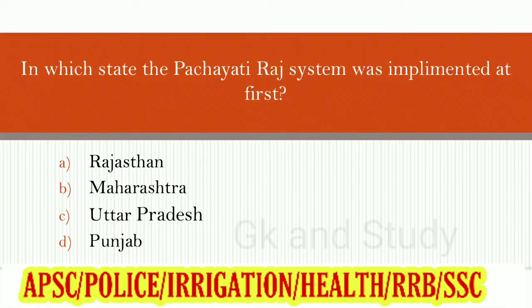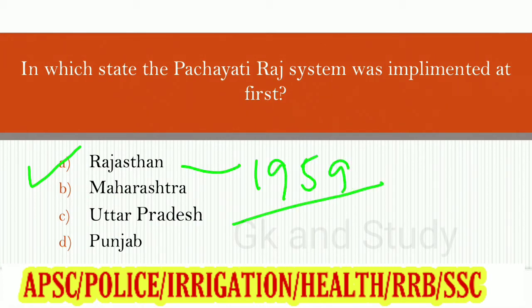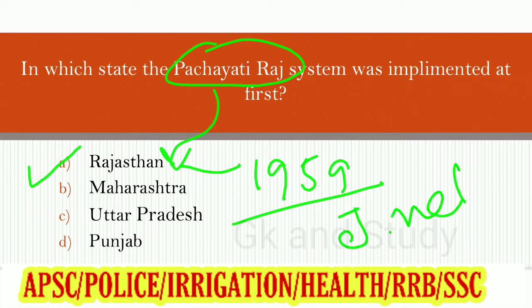Next question: in which state was the Panchayati Raj system implemented first? The answer is Rajasthan — Panchayati Raj was first implemented in Rajasthan in 1959, when the Prime Minister was Jawaharlal Nehru.